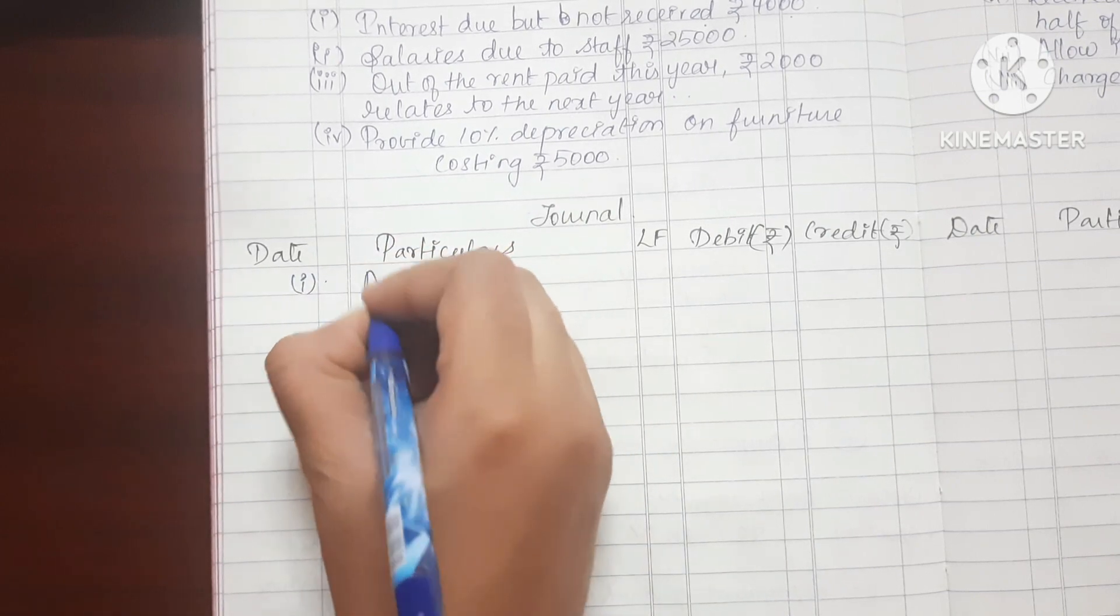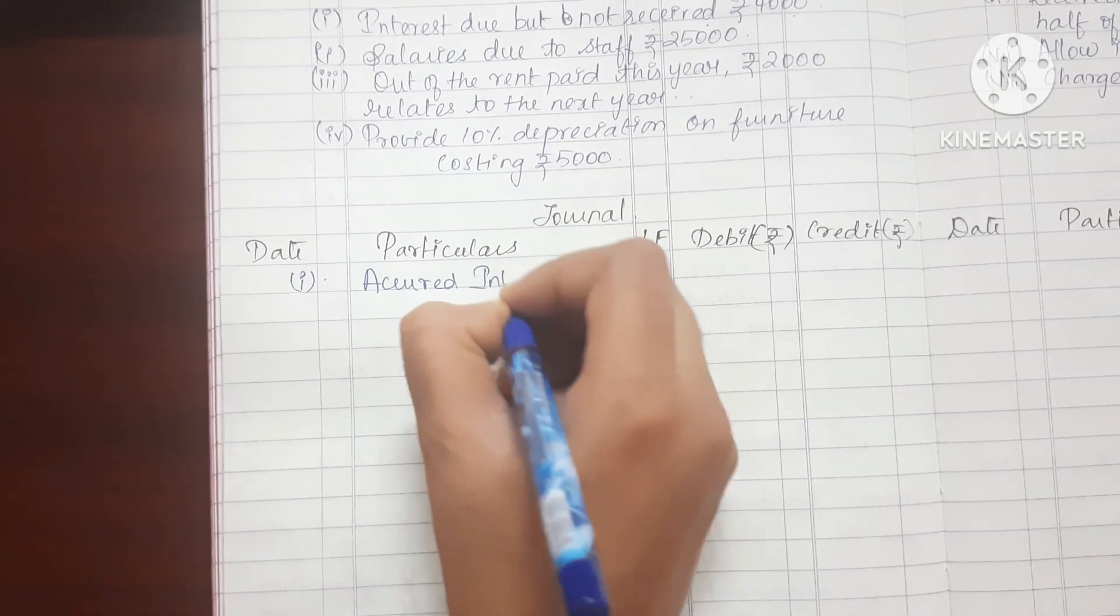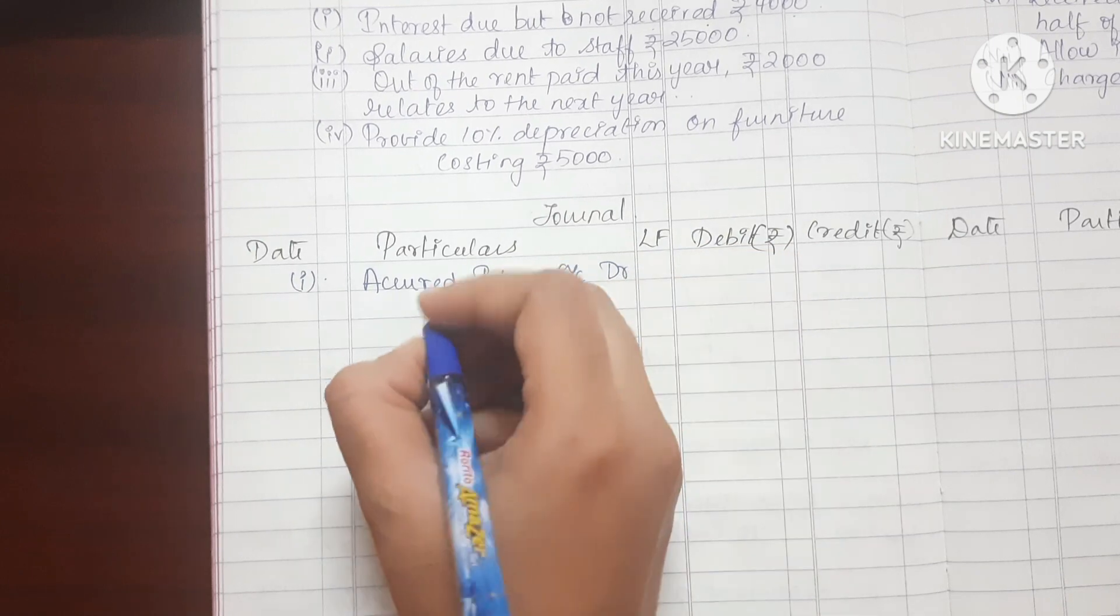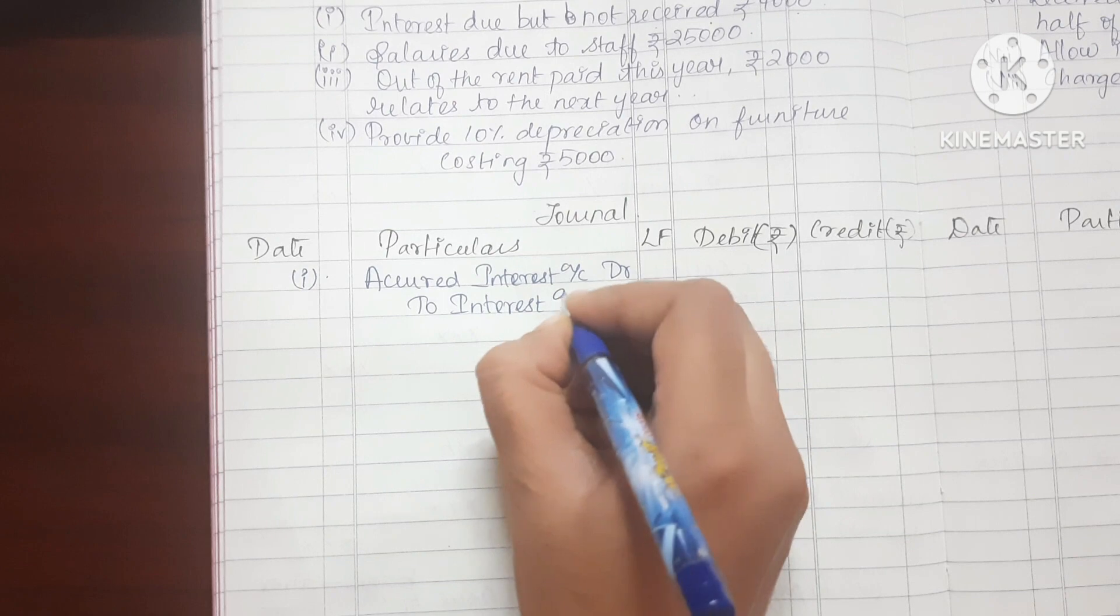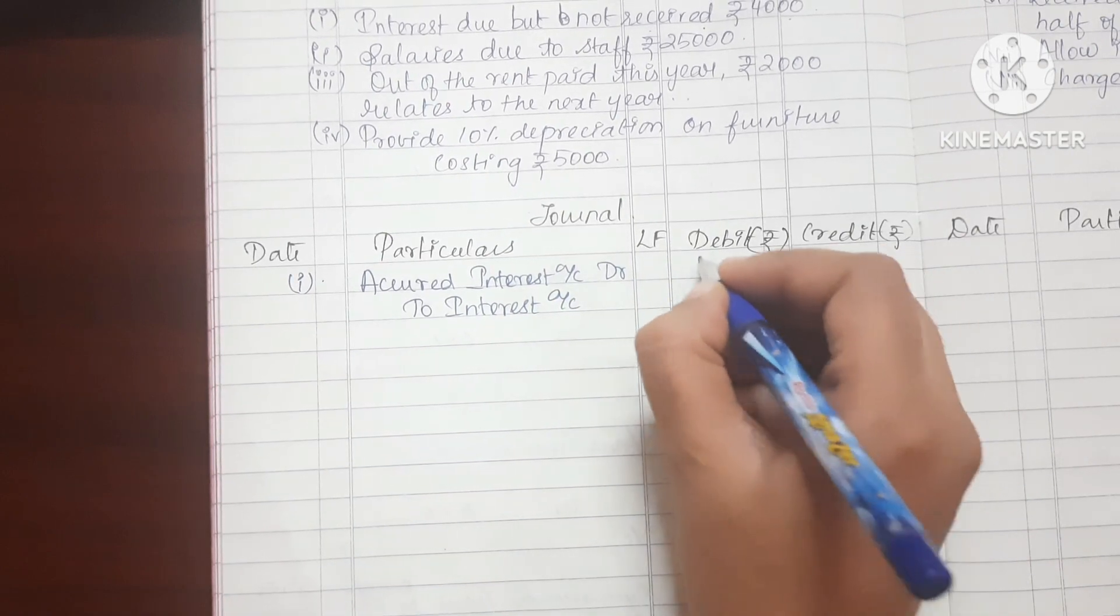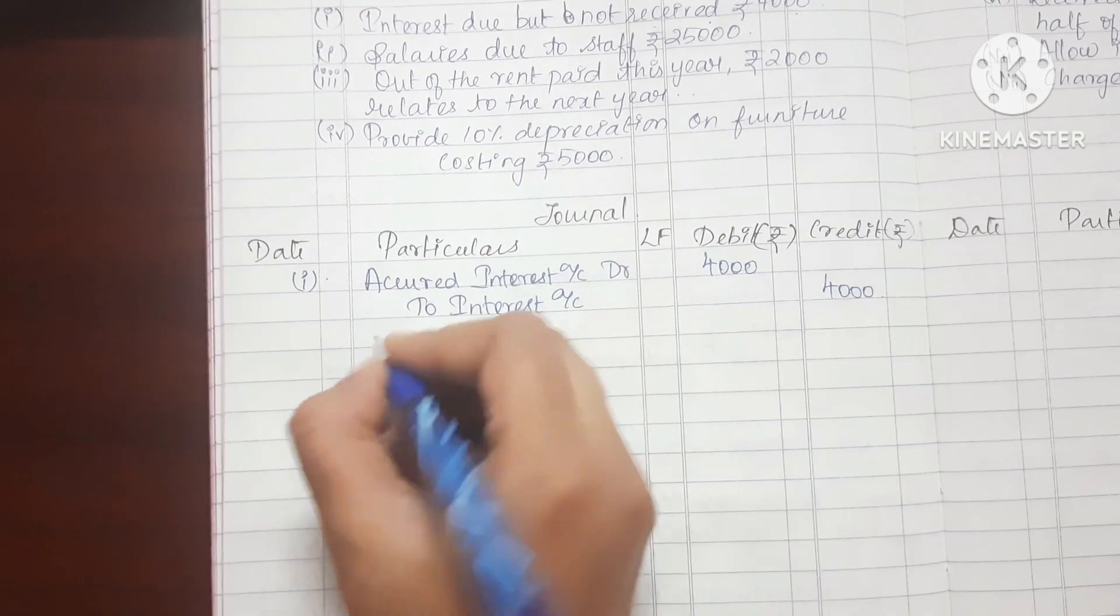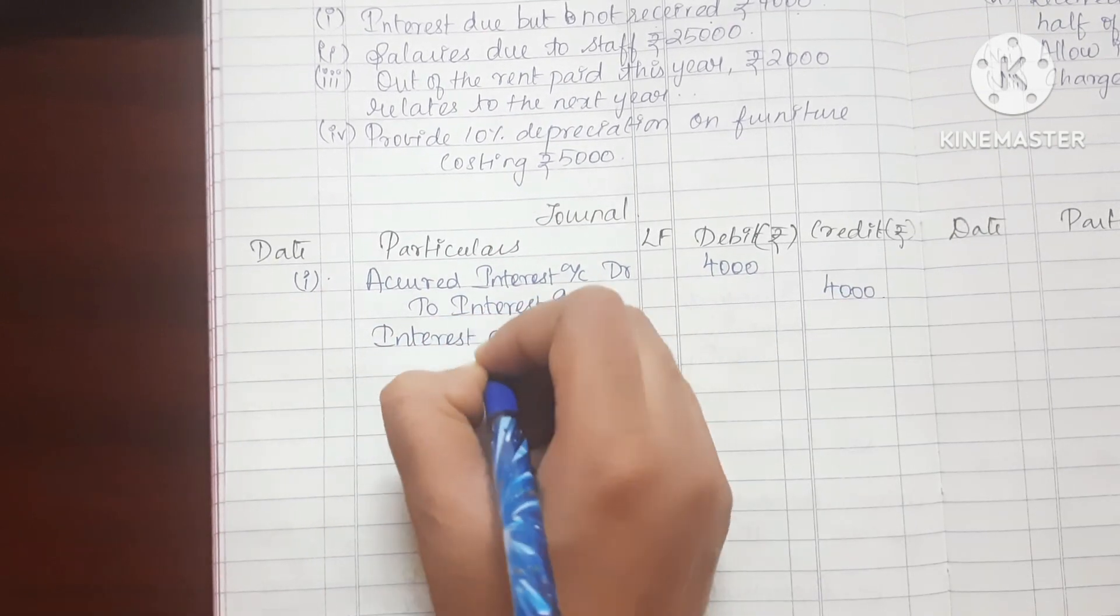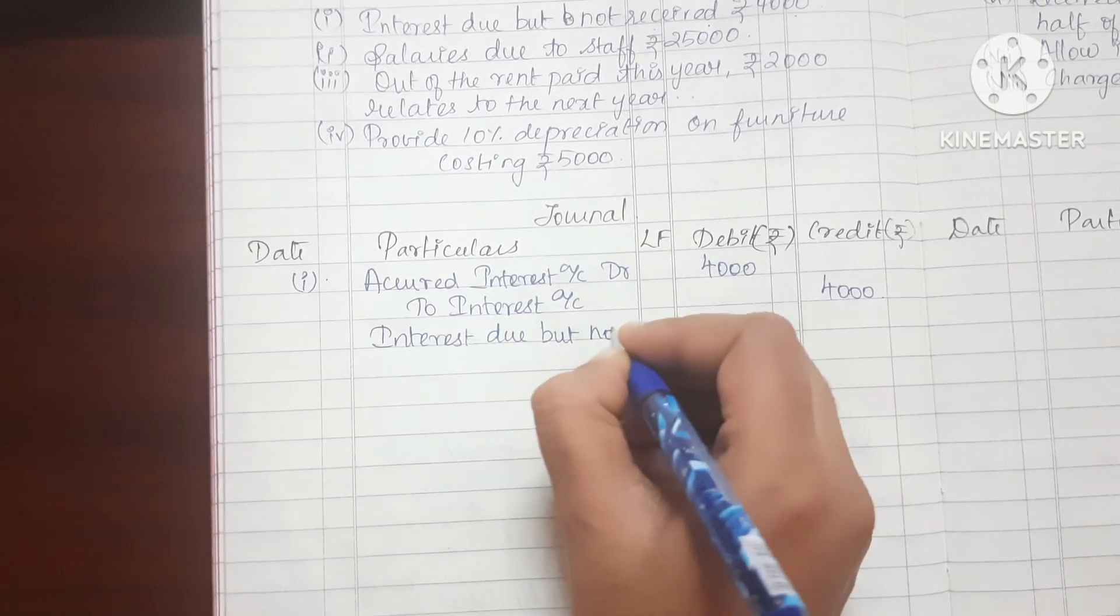First one, Accrued Interest Account debit to Interest Account. Amount 4000. Narration: Interest due but not received.